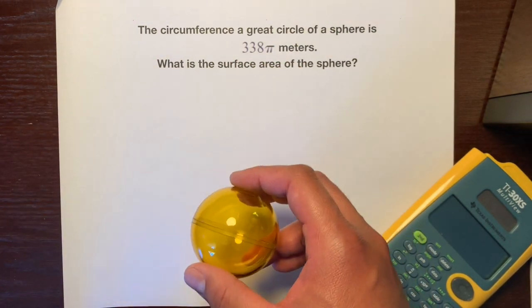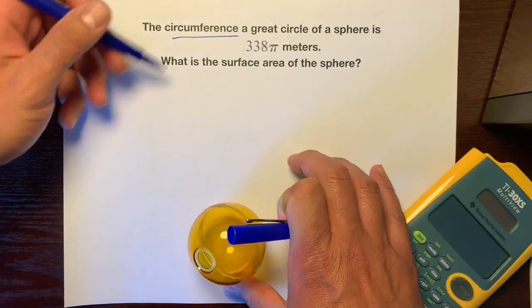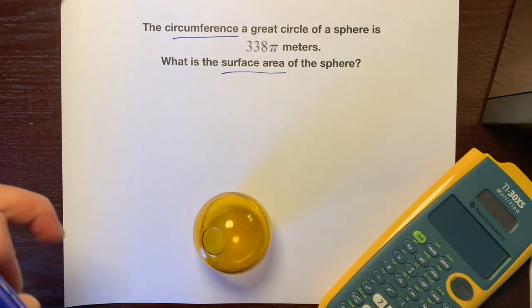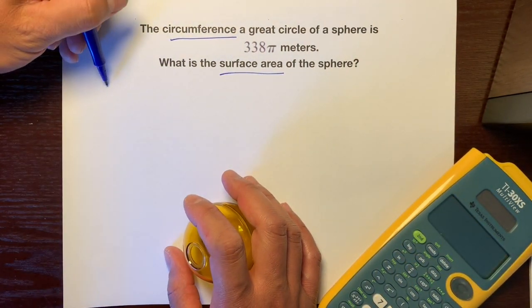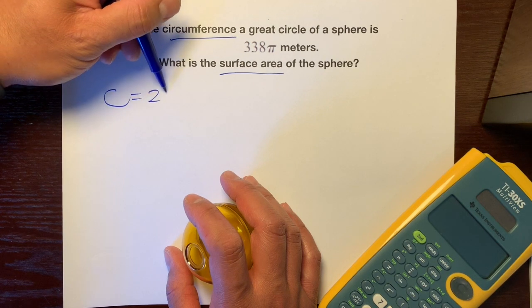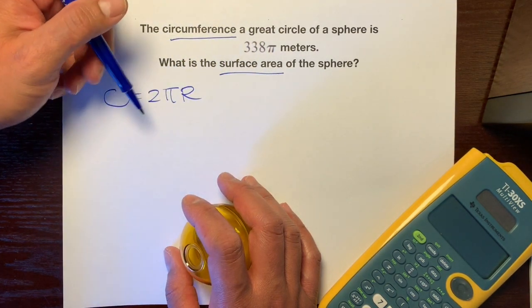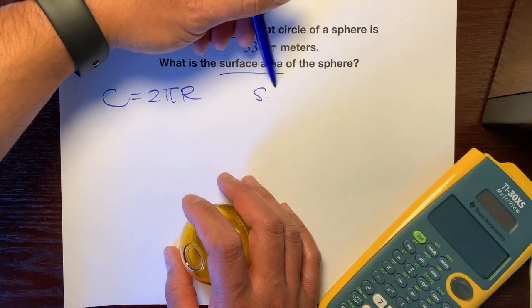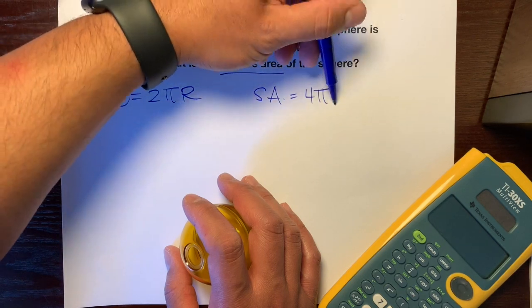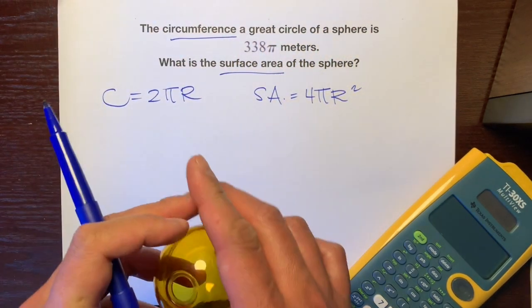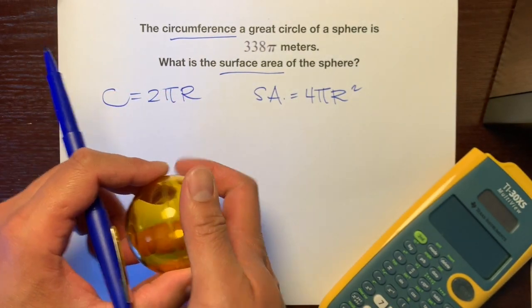So we need two formulas. We need the formula for the circumference of a circle and the surface area of a sphere. Circumference is C = 2πr, and surface area of a sphere is SA = 4πr². That means four circles would cover up this entire surface of the sphere.